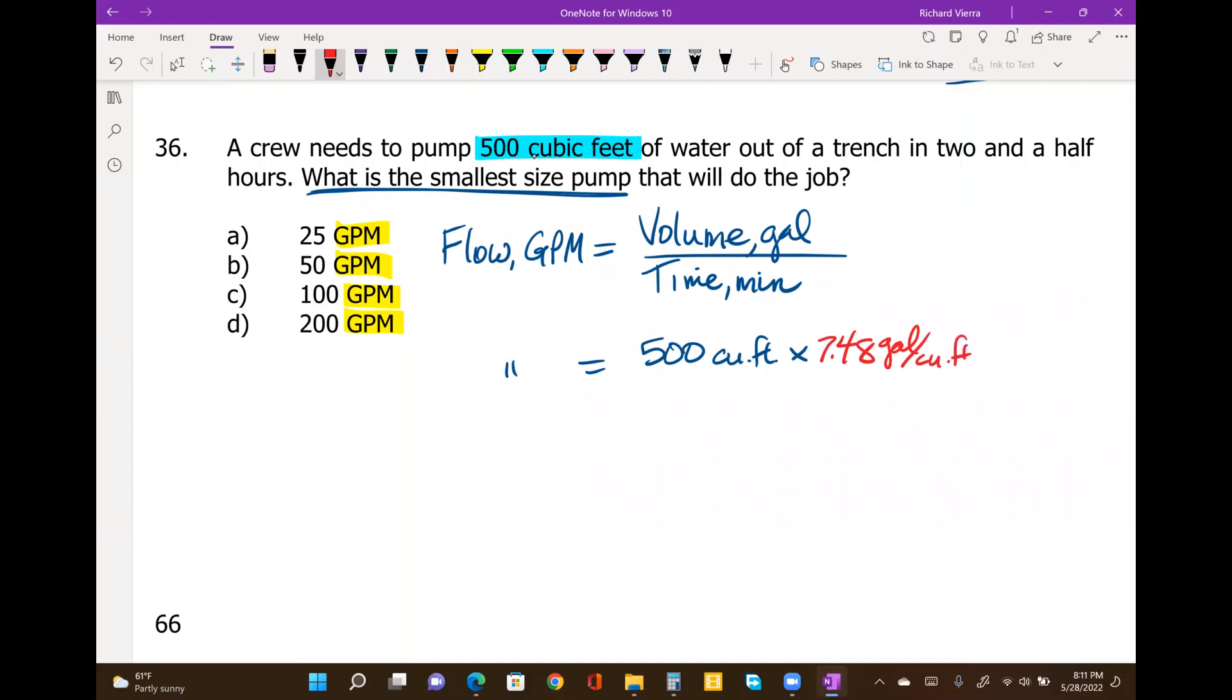And similar to the last example, we have our time period that they're wanting to have this done within, given in hours. So we're going to multiply that number times the 60 minutes per hour.